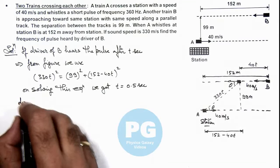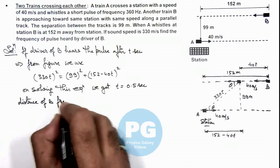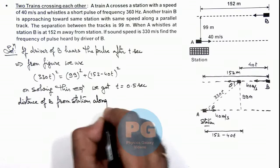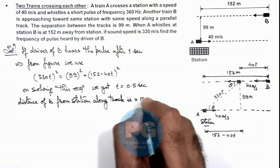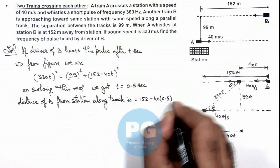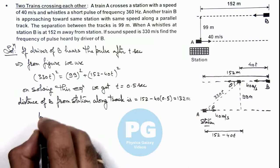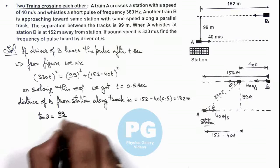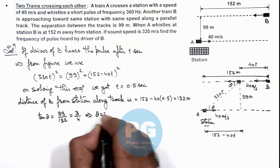Then the value of theta can also be calculated. If we calculate the distance of B from station along the track, this distance is 152 minus 40t, and t is 0.5, so this equals 132 meters. So here the value of tan theta we are getting is 99 divided by 132, that is 3 by 4. This implies the value of theta is 37 degrees.